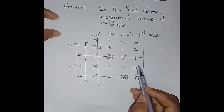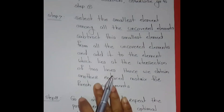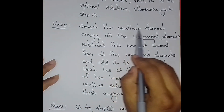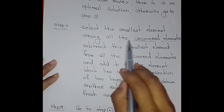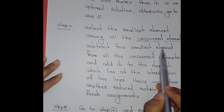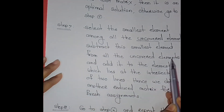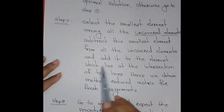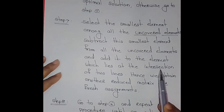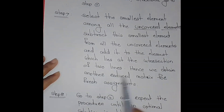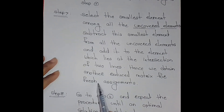If the number of straight lines drawn equals the order of the cost matrix, it is an optimal solution; otherwise go to step 7. The total number of straight lines is 3, but the order of the matrix is 4, so we proceed to step 7.